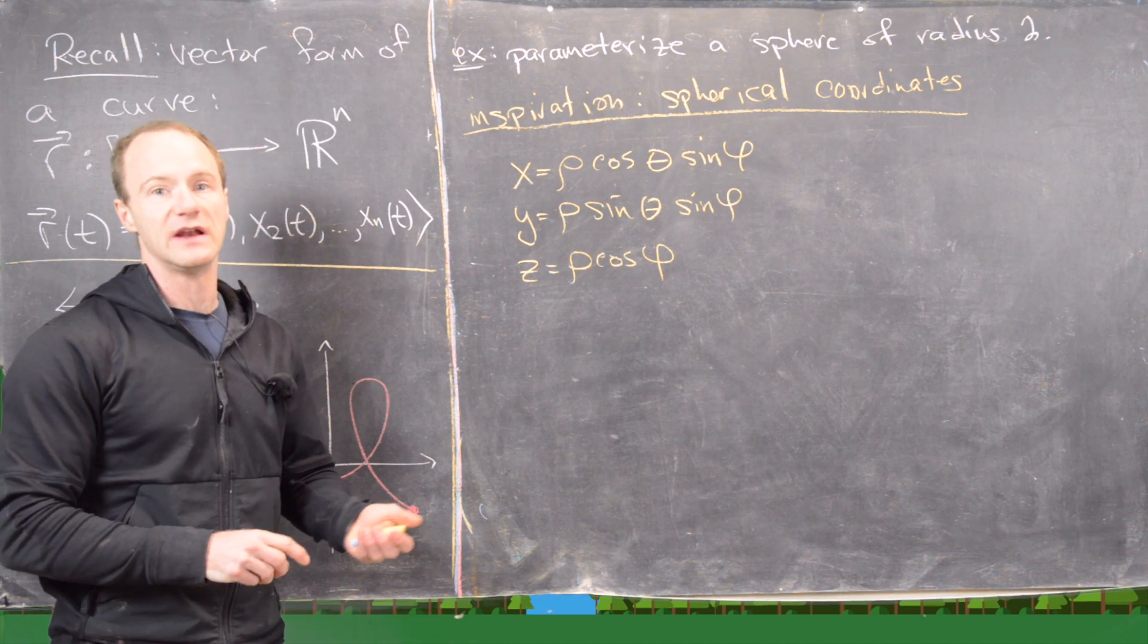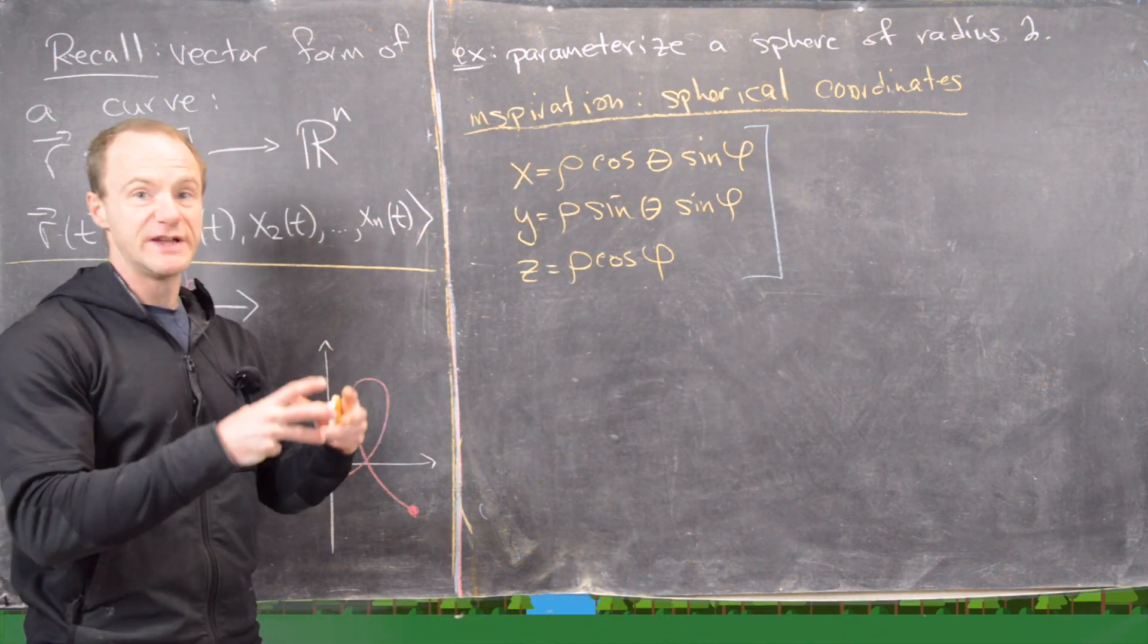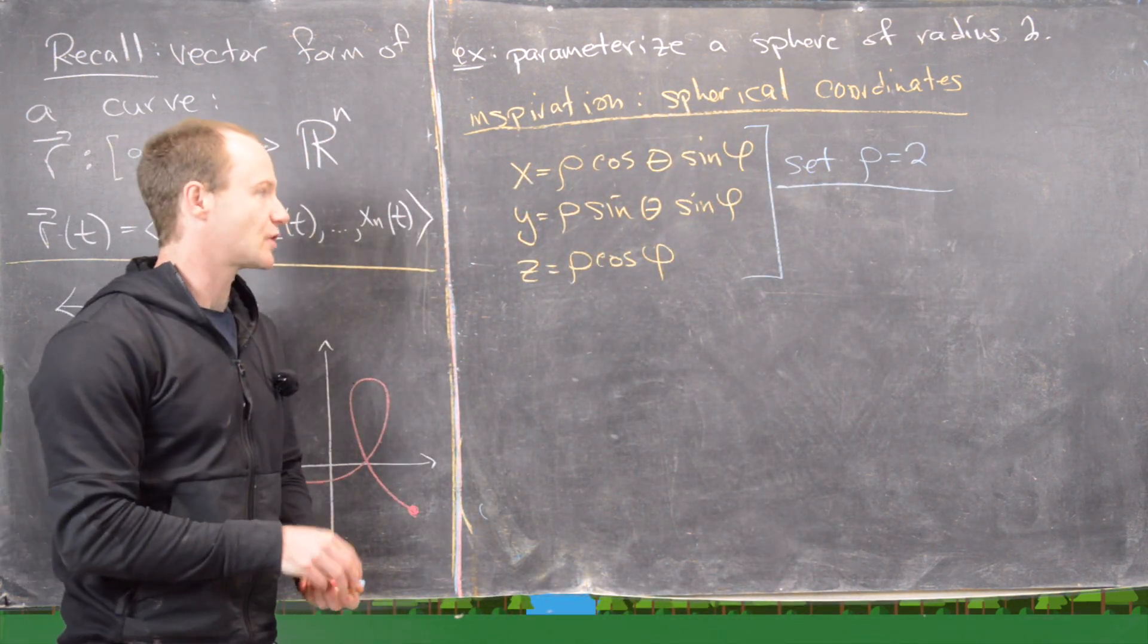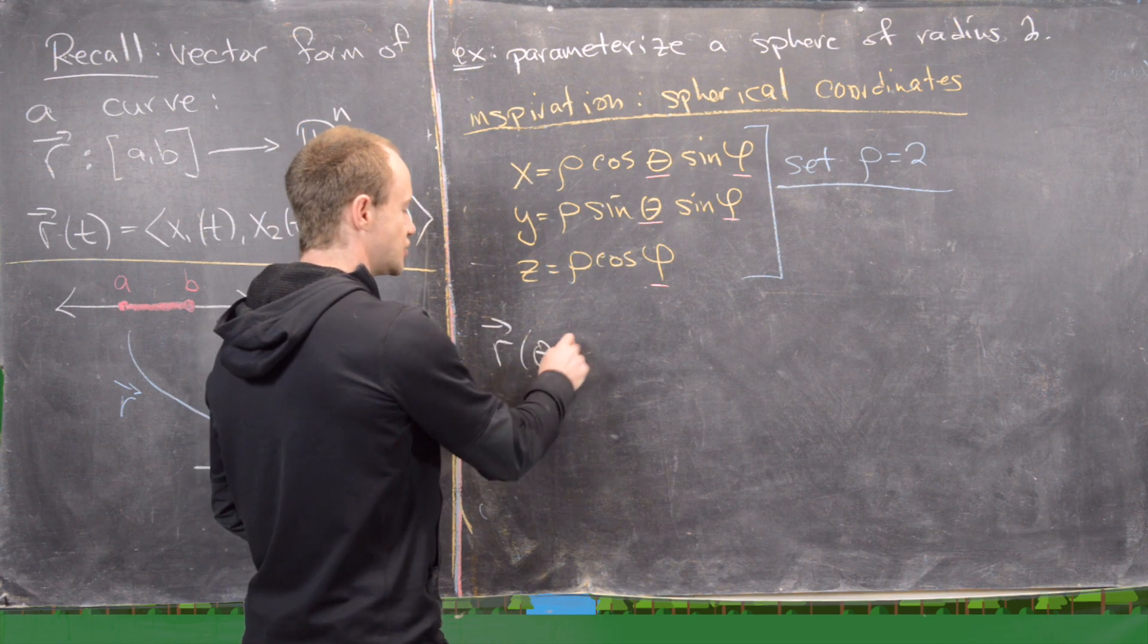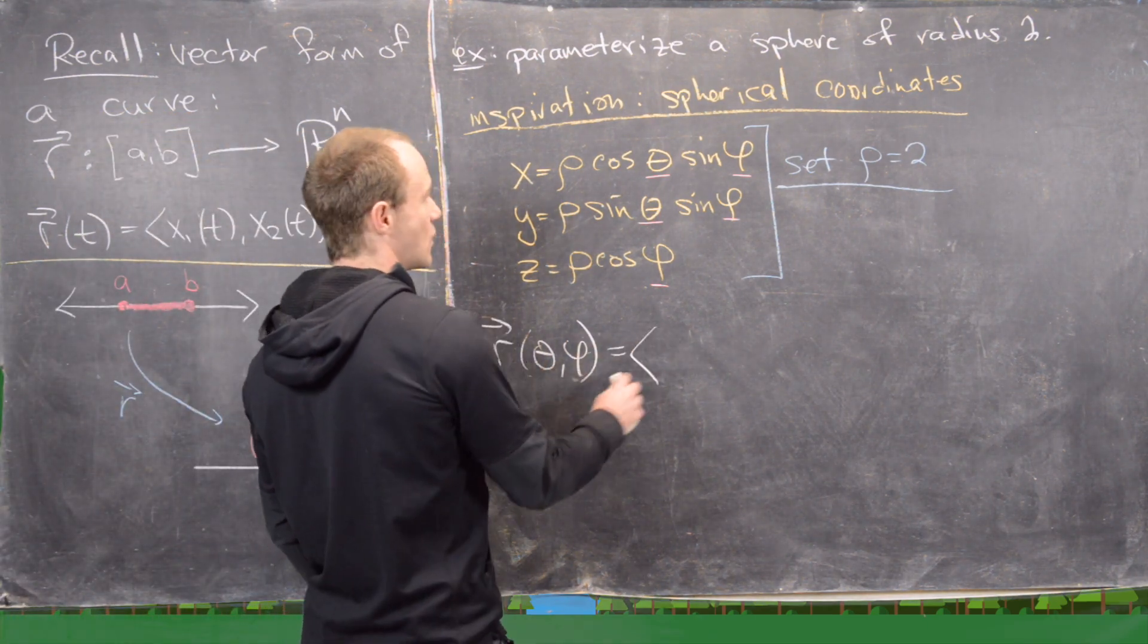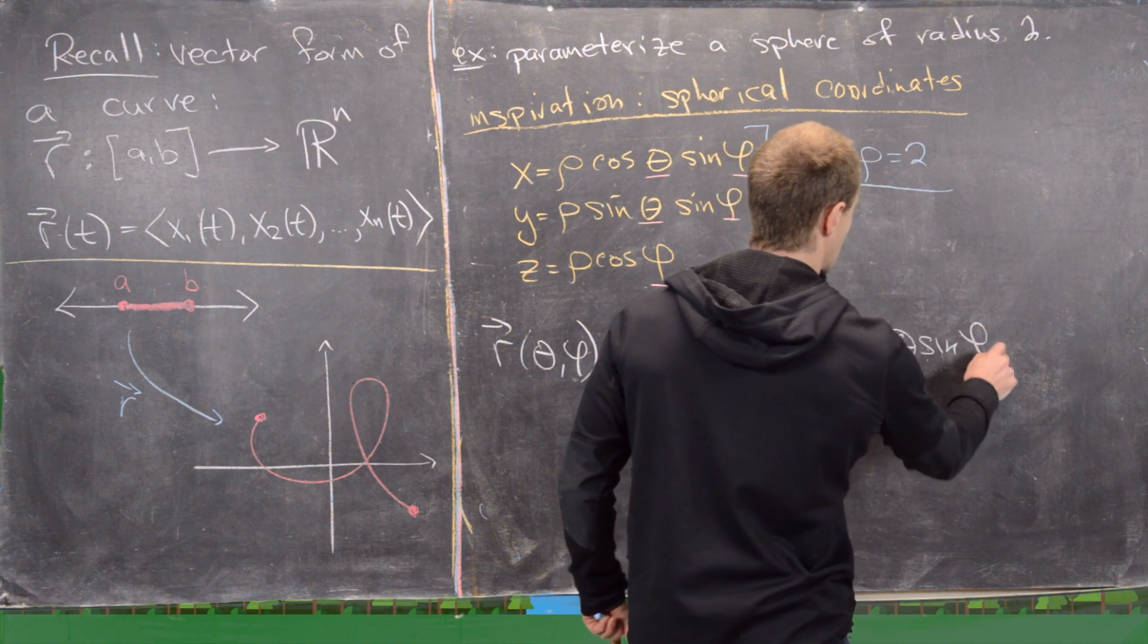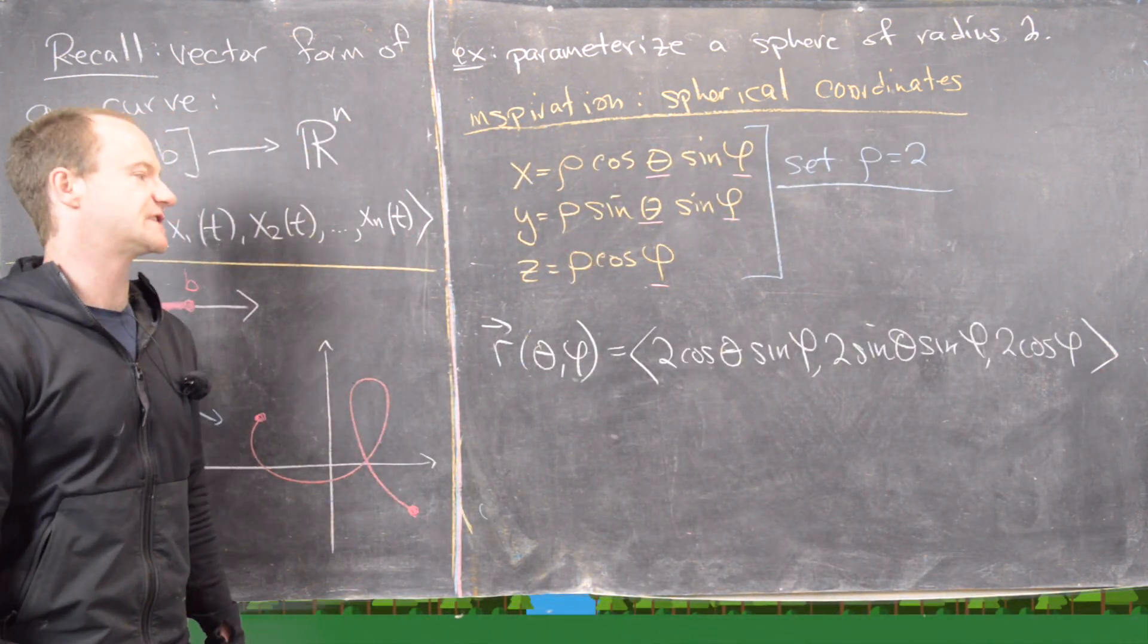But the real thing to hone in on here is we just want like the crust of a sphere of radius 2, which means we're going to set rho equal to 2 in this setup. And that is going to give us two variables, and they'll be theta and phi. So that's going to give us the following vector equation for our sphere. So we've got r, it depends on theta and phi. And in the first coordinate, it's going to be 2 cosine theta sine phi. Then it'll be 2 sine theta sine phi. And then finally, it'll be 2 cosine phi. So there's our parametrization of the sphere of radius 2.